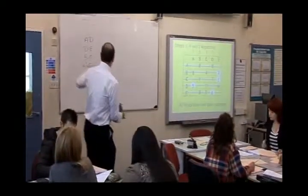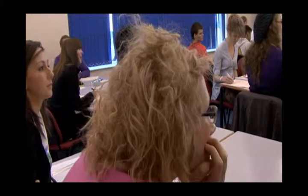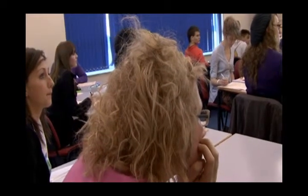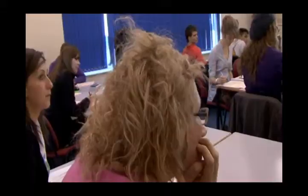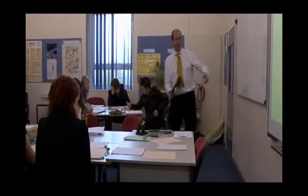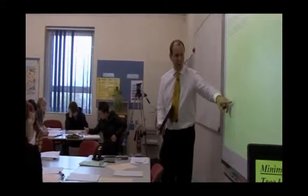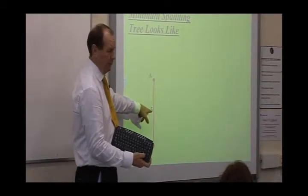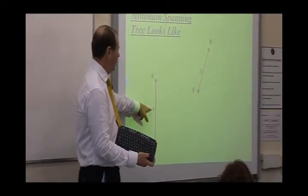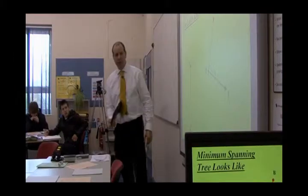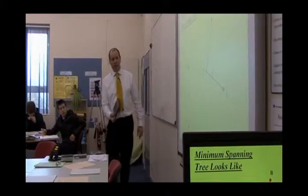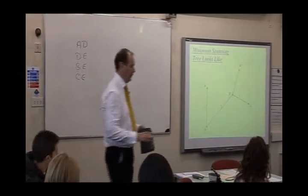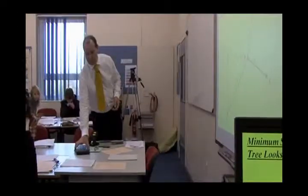So if I look down here: AD, DE, BE and CE. Just draw them from the original network. First one is AD. Just make sure you put the weight in — very important that the weights go in. AD is 5, BE is 3, EC is 1 and ED is 6. That's the minimum spanning tree from the matrix.